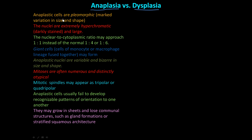Anaplastic cells are pleomorphic, which means they show marked variation in size and shape. This is just a review, but repetition brings conviction. The nuclei are extremely hyperchromic and large — they are dark stained. The nuclear-to-cytoplasmic ratio is 1 to 1, instead of the normal 1 to 4 or 1 to 6.